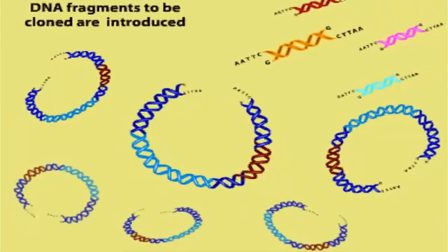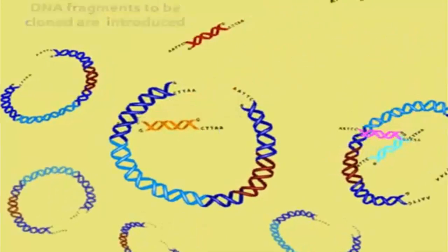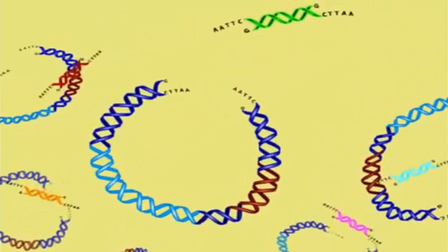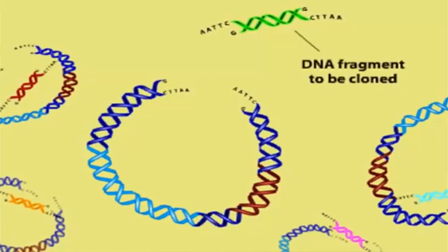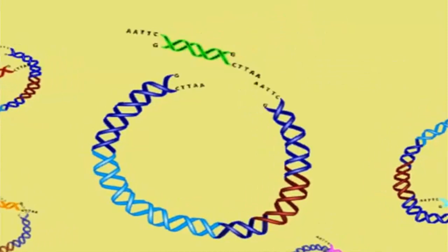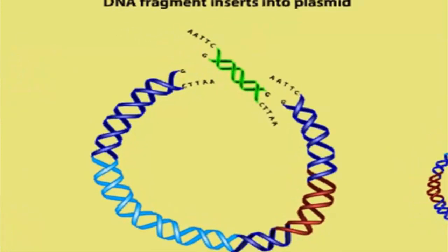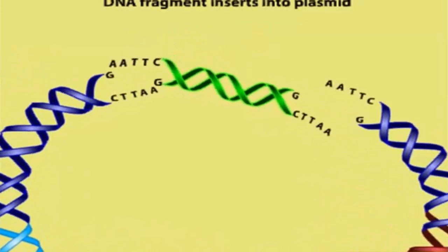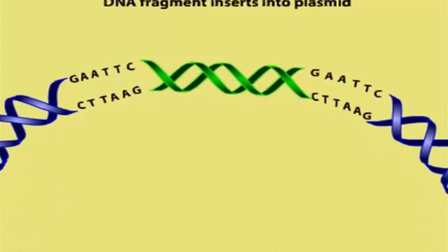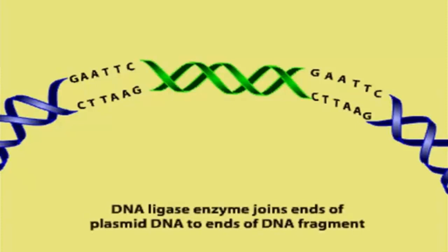Foreign DNA containing the sequence we wish to clone is digested with ECO-R1 and then mixed with the cleaved vector. The sticky ends of the foreign and plasmid DNA molecules hybridize and then are sealed into phosphodiester linkages by the enzyme DNA ligase, creating a recombinant plasmid.